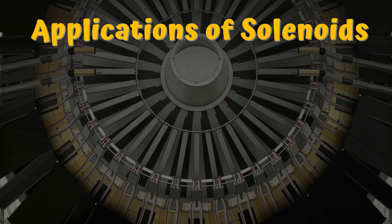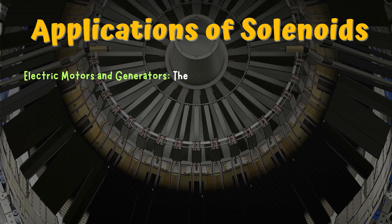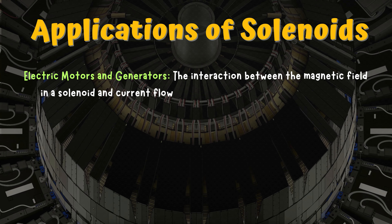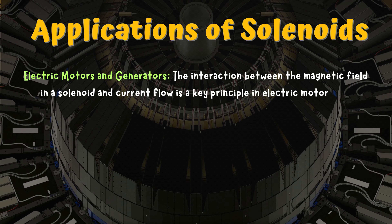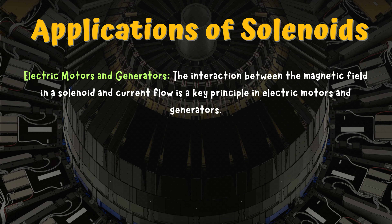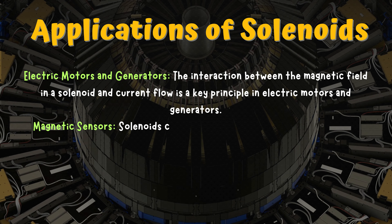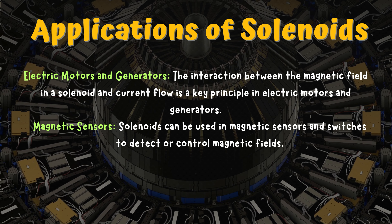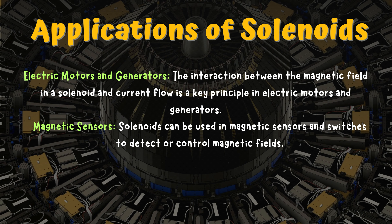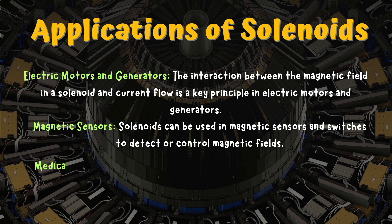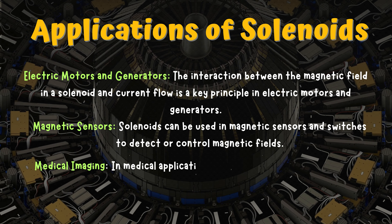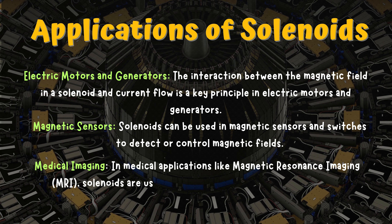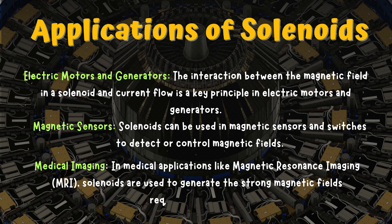Applications of Solenoids. Electric motors and generators — the interaction between the magnetic field in a solenoid and current flow is a key principle in electric motors and generators. Magnetic sensors — solenoids can be used in magnetic sensors and switches to detect or control magnetic fields. Medical imaging — in medical applications like Magnetic Resonance Imaging (MRI), solenoids are used to generate the strong magnetic fields required for imaging.